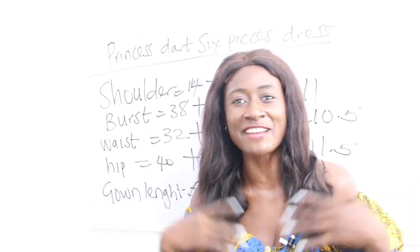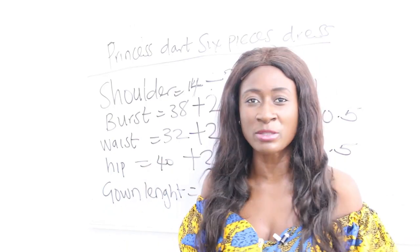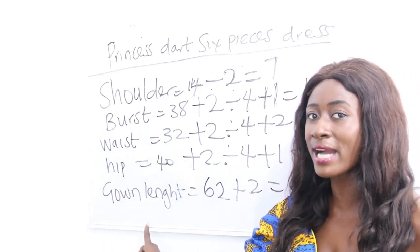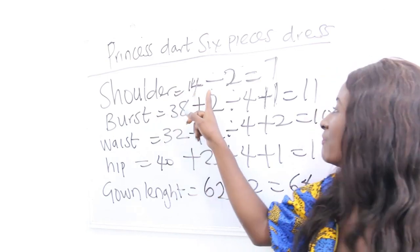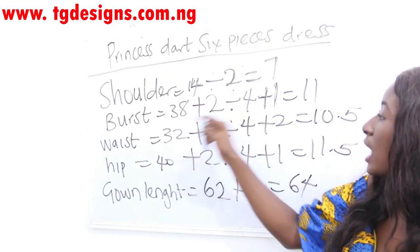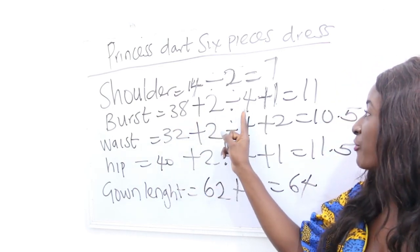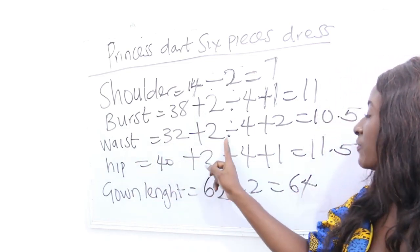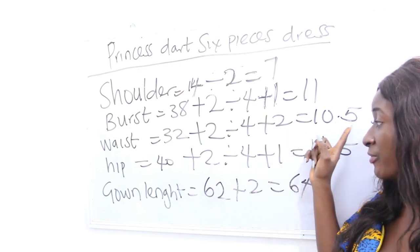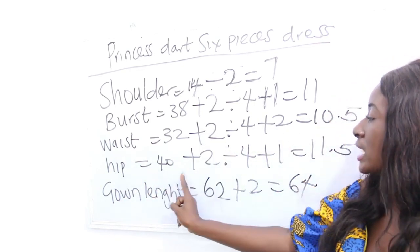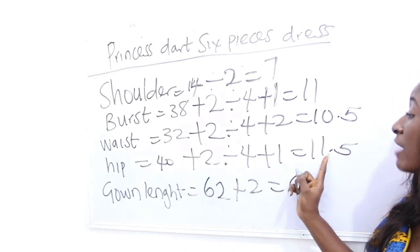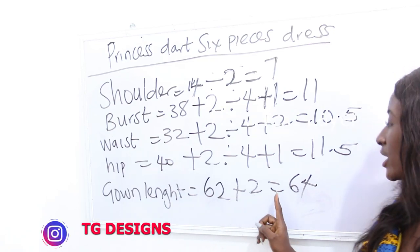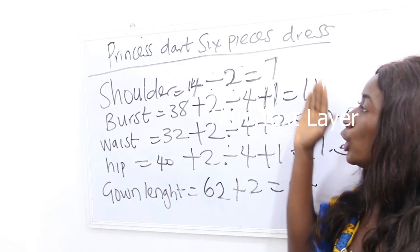The basic measurements required are: shoulder 14 divided by 2 equals 7; bust 38 plus 2 divided by 4 plus 1 equals 11; waist 32 plus 2 divided by 4 plus 2 equals 10.5; hip 40 plus 2 divided by 4 plus 1 equals 11.5; gown length 62 plus 2 inches for folding allowance equals 64 inches.